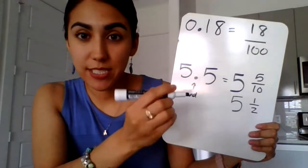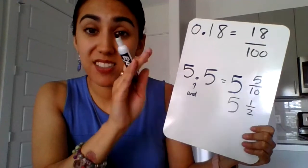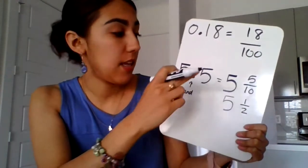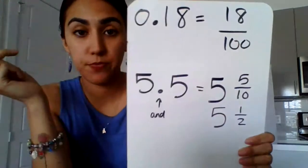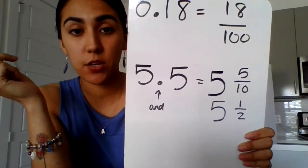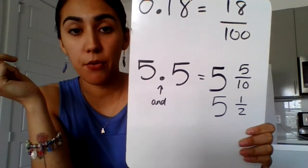So 5 tenths is equivalent to 1 half. So I will take both of these answers on the Google Form. All you need to do is type in 5, space, and then you can write 5 dash 10 or 5 slash 2. Either one, Google Forms will accept both responses.